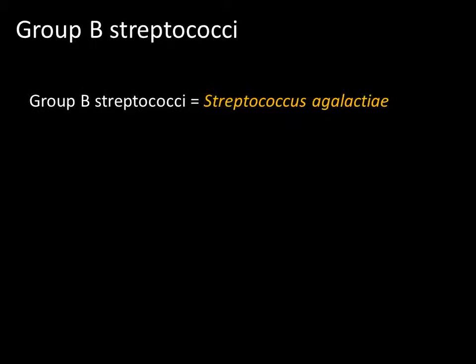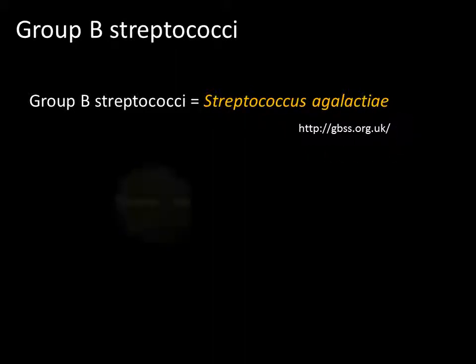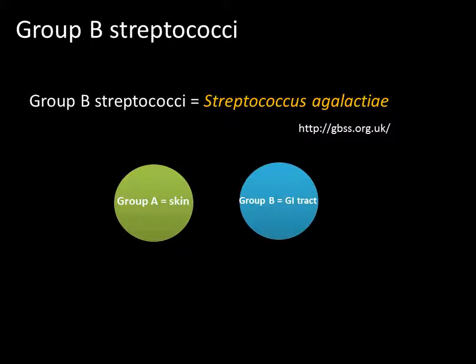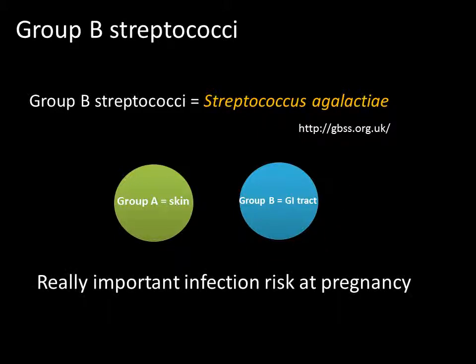We've already talked about group A streptococci. There's also group B streptococci - like group A, group B only has one streptococcus member, which is Streptococcus agalactiae. Group A is generally only found on the skin and sometimes in the upper respiratory tract, while group B streptococci is usually only found in the GI tract. Group B streptococci is a really important infection to be aware of within pregnant women. I'd like you to take a moment to refresh what we mean by TORCH - what does the TORCH acronym stand for when referring to important infections in pregnancy?